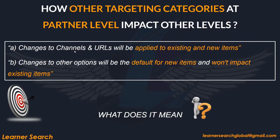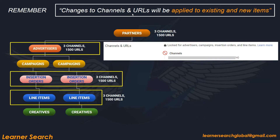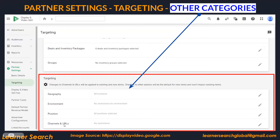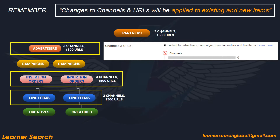The first point: changes to Channels and URLs will be applied to existing and new items. Let's assume we have added three channels and 1500 URLs at the Partner Level. Only Channels and URLs will have this effect — the rest of the options will not impact existing items. Channels, in the sense, are a list or bulk of URLs taken together and created with a name, like 100 or 1000 URLs added into one channel. So there are three channels and 1500 separate URLs targeted at Partner Level.